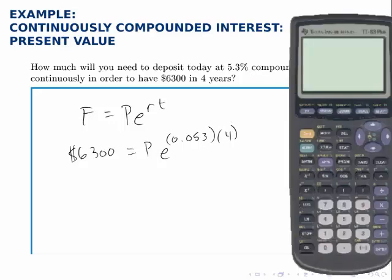So to solve for P, first we need to figure out what e to the 0.053 times 4 is, and then divide both sides by that. Calculating e raised to the power of 0.053 times 4, that is 1.236.